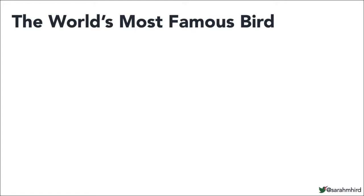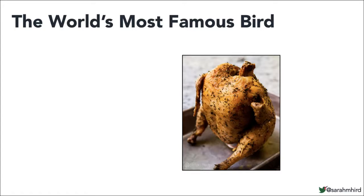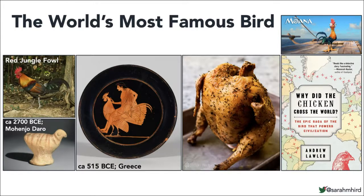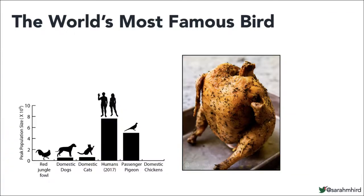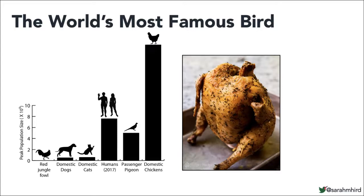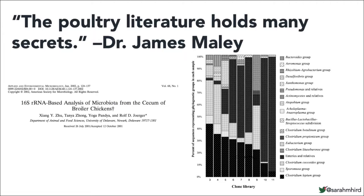Bird microbiome research more or less originated with the world's most famous bird, which of course is the chicken. Some estimates say humans began domesticating the red jungle fowl as many as 10 or 12,000 years ago. I've plotted the modern population sizes for the red jungle fowl alongside all the world's domestic dogs and cats as a reference, humans at close to 7 billion people, and the largest estimated species size of a passenger pigeon. How many chickens are on the planet right now? About 20 to 21 billion — roughly three for every one human.